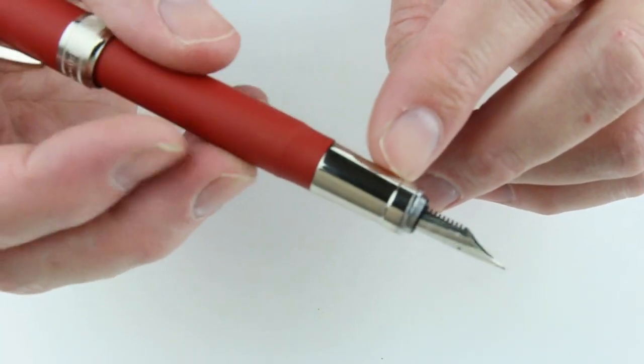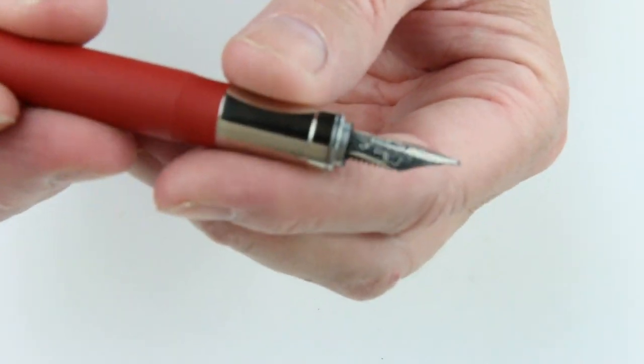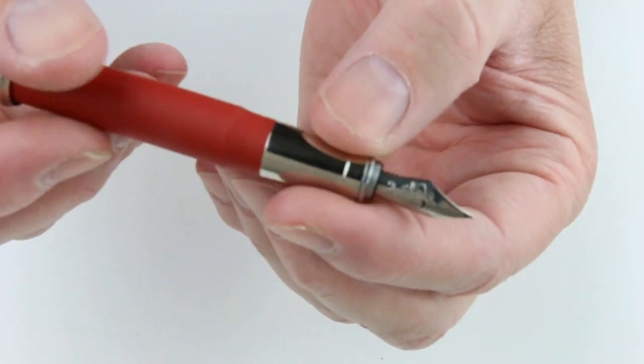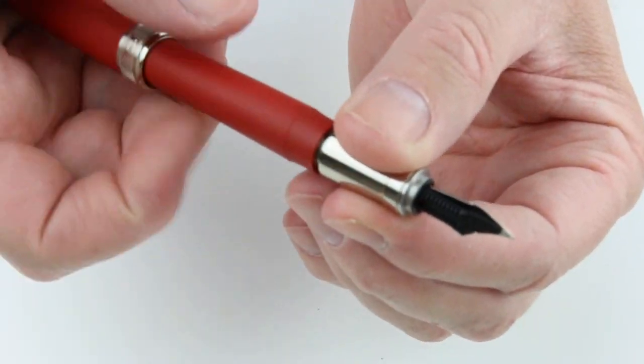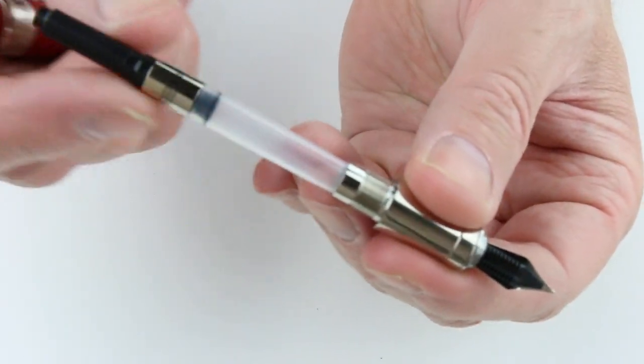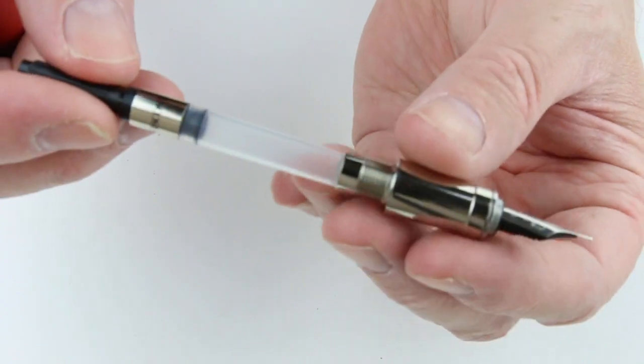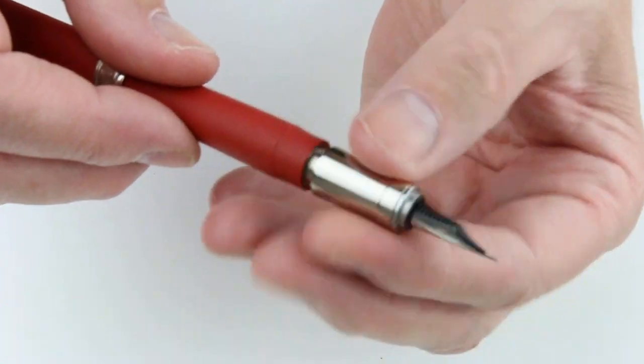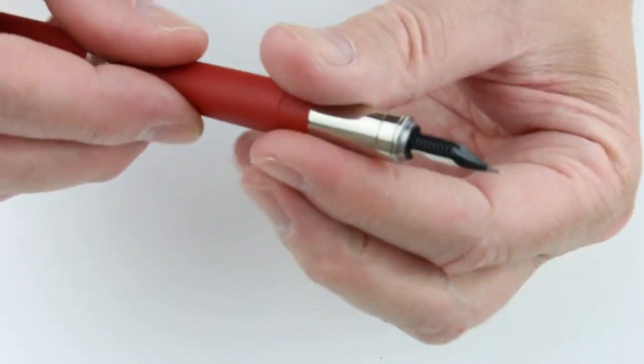It has a matching silver metal section with a matching silver stainless steel nib and black feed. It is a cartridge converter style pen so the front section will unscrew and included with the pen is an ink converter for use with bottled inks. It will also accept a standard international ink cartridge if you would like to use cartridges as well.